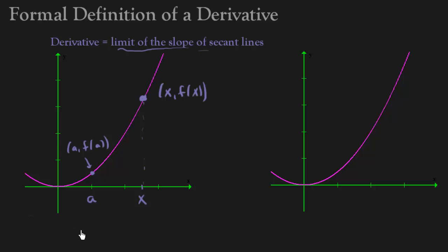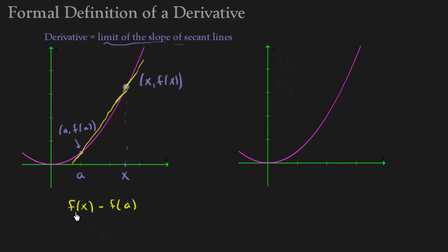So if I want to know the slope of the line connecting those two points. Again, that was called our secant line. The slope of that secant line is going to be f of x minus f of a all over x minus a.